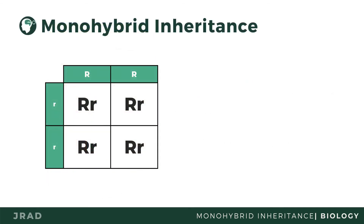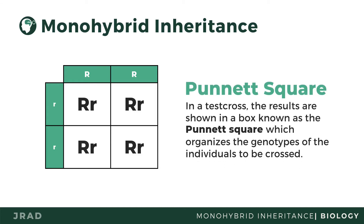In constructing a test cross, results are shown in a box known as the Punnett square. It organizes the genotypes of the individuals to be crossed. Punnett squares are similar to multiplication tables by how they are arranged. The square is arranged in a manner where alleles of one parent are placed on top and the alleles of the other parent are on the right side of the box. The alleles on the right and the top are crossed together to show the possible expressions of their offspring.